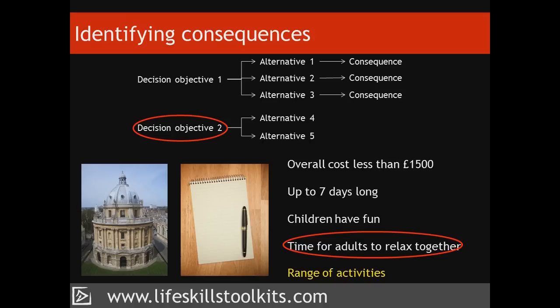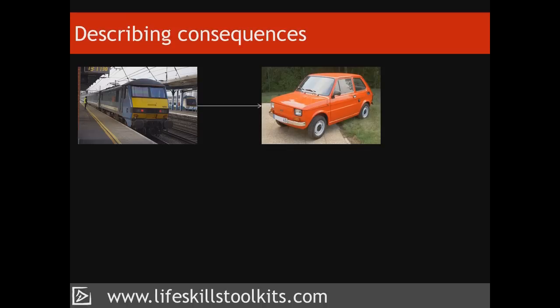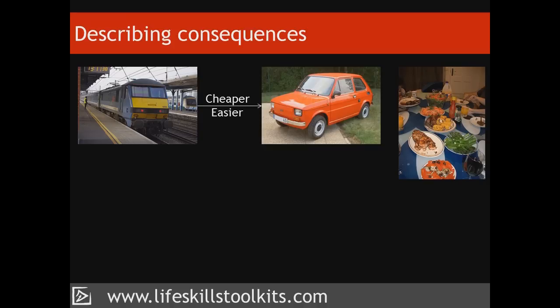Whatever your consequences, write them down, because the next step involves fully describing them. If we don't fully understand the consequences of our alternatives, just how informed are our decisions? For example, a friend explains that everyone finds it easier to take the train when visiting her and that it would be cheaper than driving. It's difficult to decide between taking the train or driving for three reasons: while your friend wants to be helpful, she's being incomplete, inaccurate, and imprecise with the information she's provided about the consequences of each alternative.